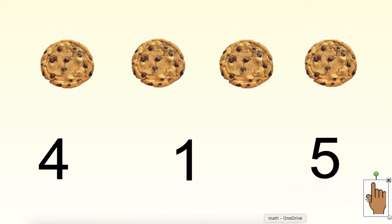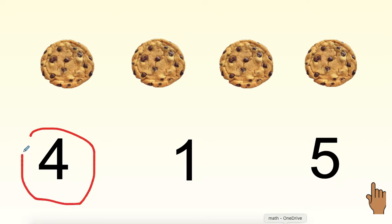Let's look at our number choices before we make a selection. Point to the number that shows how many cookies there are. If you'd like, as a reminder, you can pause the video and take more time to count. Did you choose this one? There are four cookies. Nice job.